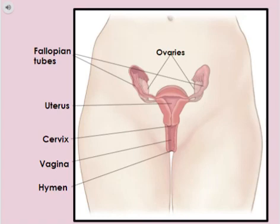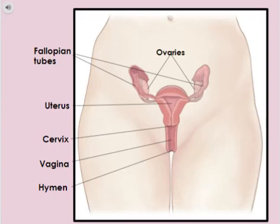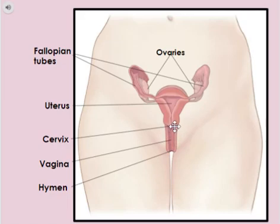So here we see on the inside of a woman, this is the reproductive system. So we see the hymen, which would be a thin membrane which partially covers the vagina. Then we've got the vagina in here, and it is a muscular tube which expands to fit the penis during intercourse or baby during birth. Then we've got the cervix, which is at the narrow inner end of the vagina, and it leads to the uterus.